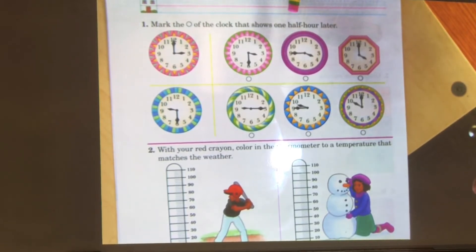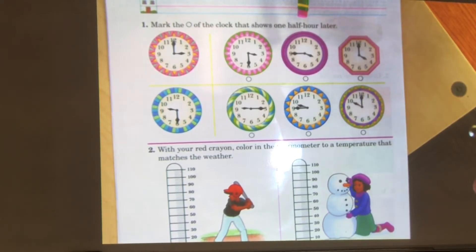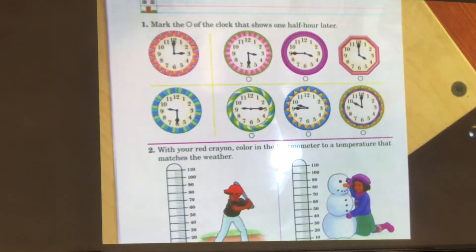You need to ask yourself how many minutes is one half hour later. If there's 60 minutes in one hour, half of 60 is 30 minutes. So one half hour later is a total of 30 minutes. So if it's three o'clock now, one half hour later, it will be 3:30.